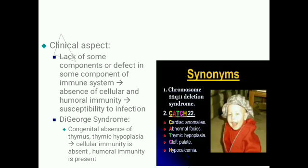One example is DiGeorge syndrome, where there is congenital absence of the thymus or thymic hypoplasia, and therefore cellular immunity is absent, while humoral immunity is present.